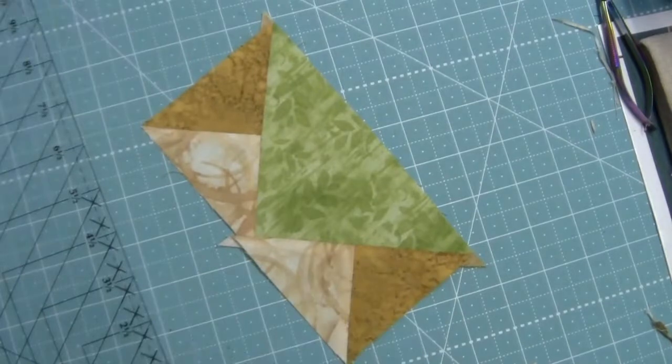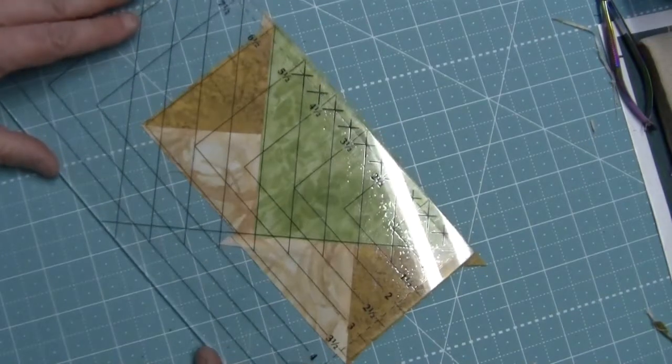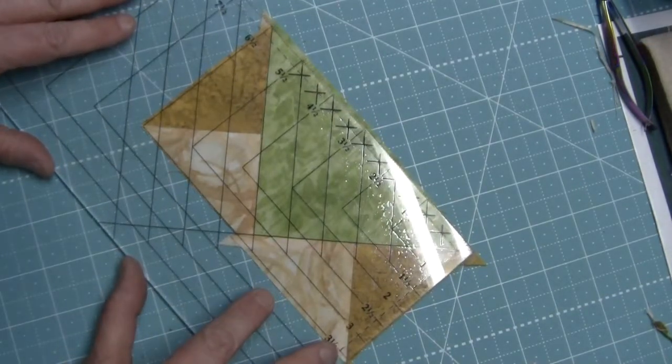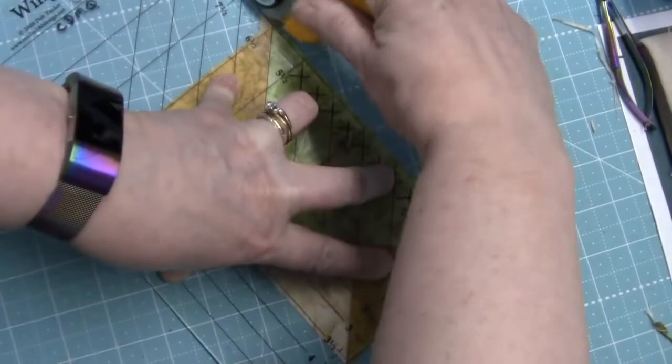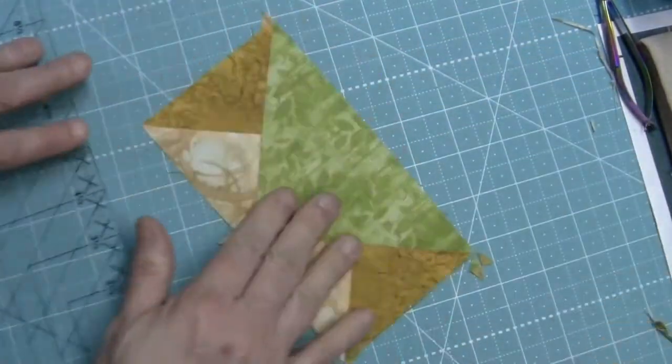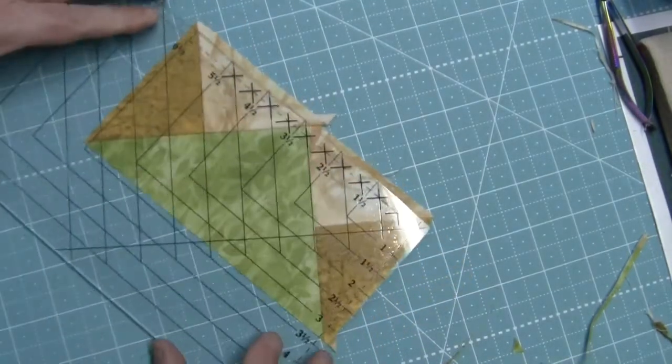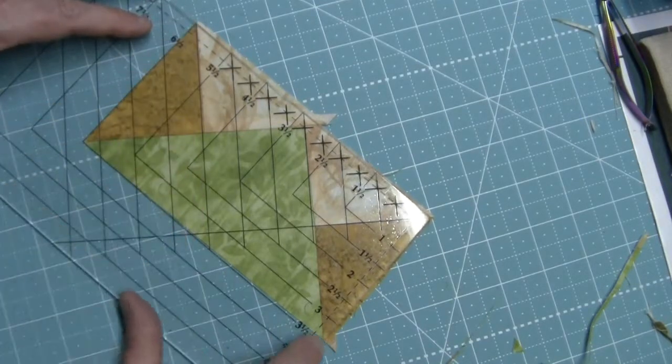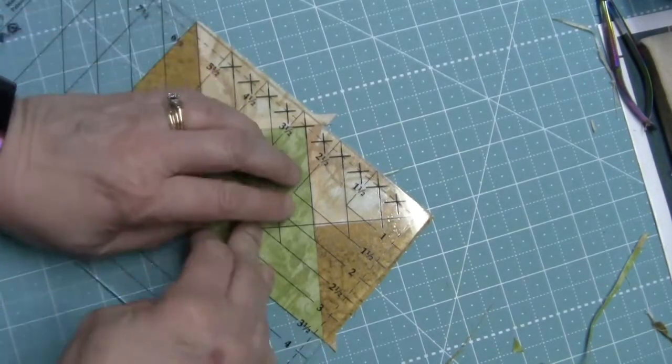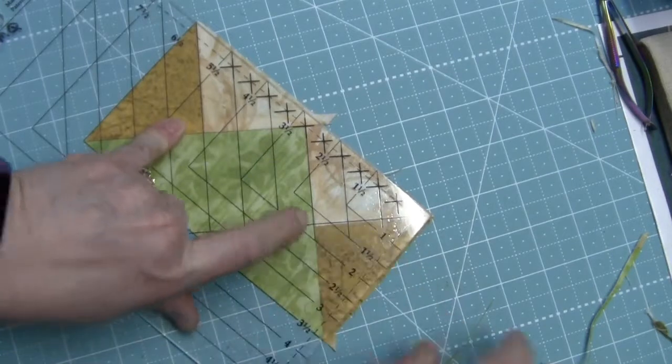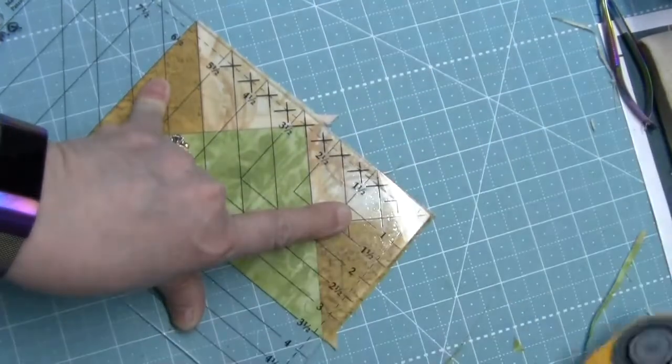First I'm going to show you how to trim using your wing clipper. We want 6 and a half by 3 and a half. We're going to put the V in the V of our goose, trim two sides, rotate the unit. Now we can line up on the two trim sides on the 6 and a half and 3 and a half inch lines, and you'll see these other lines that will line up on our seams, in our wings, in our sky.